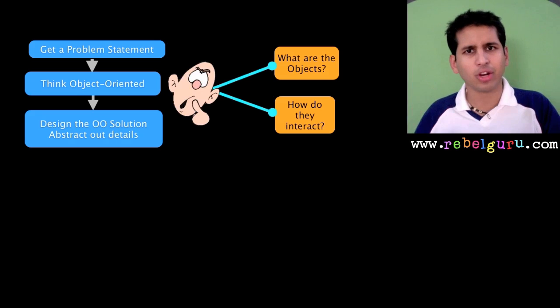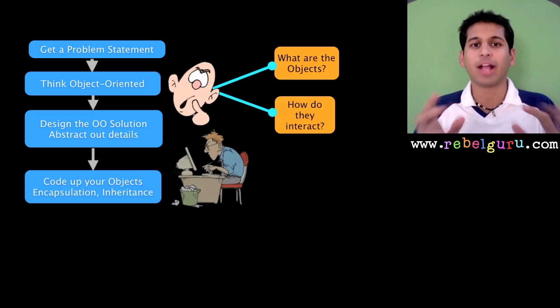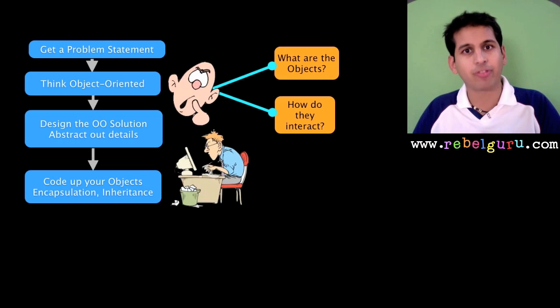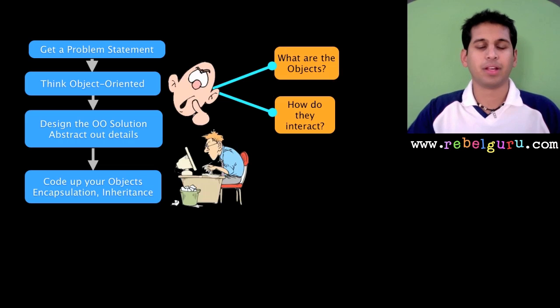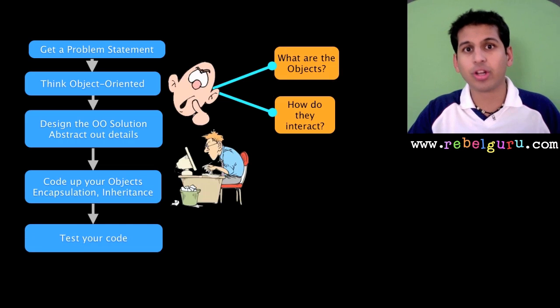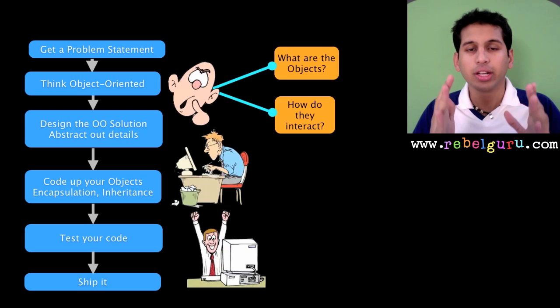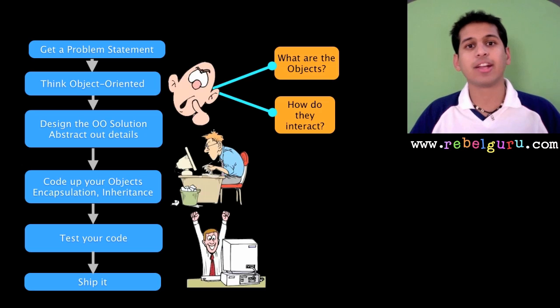The next stage is where you actually start coding. That's where you use an object-oriented language such as Java and all its properties such as encapsulation, inheritance, and polymorphism to translate your drawings or design into code. Then of course you have to test your code, and if your code is working fine you're ready to ship it. This is how object-oriented programming happens in the real world in the industry.